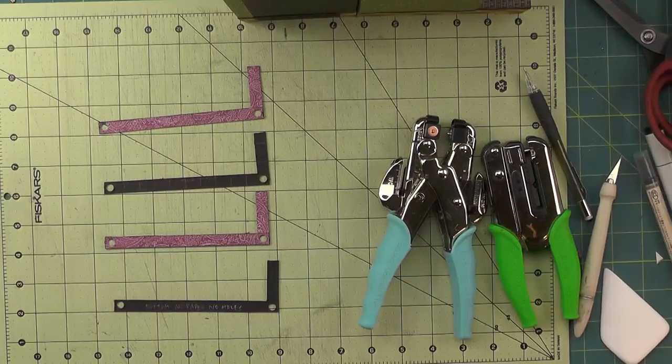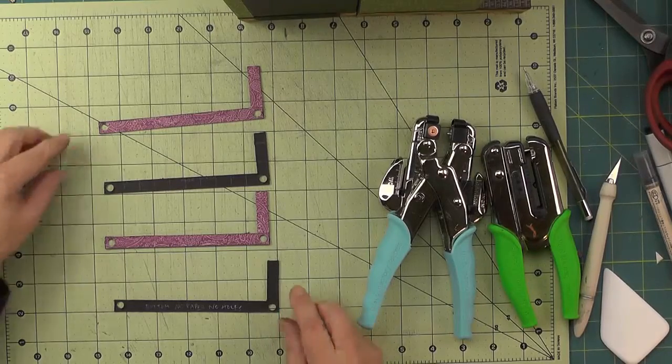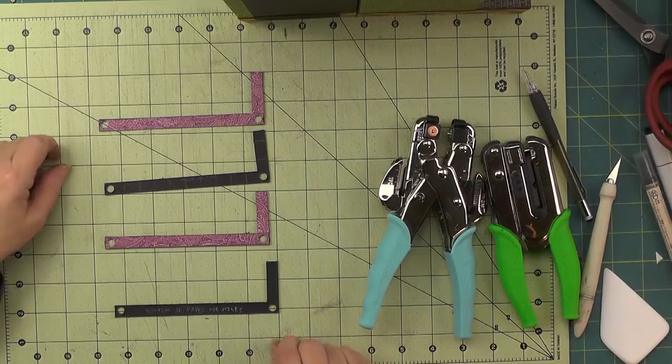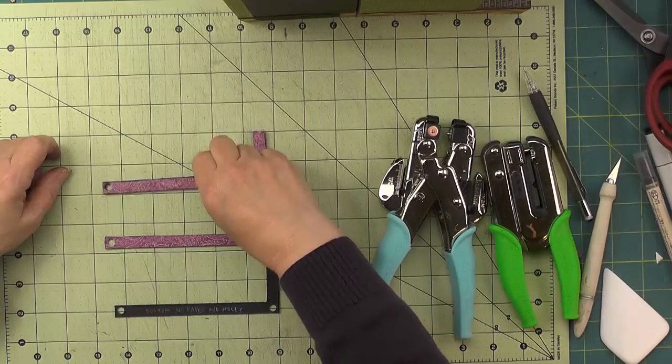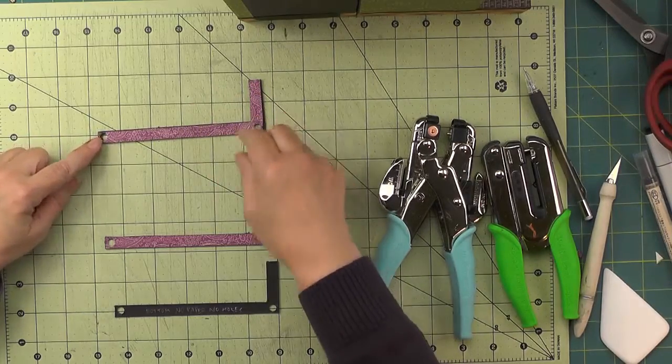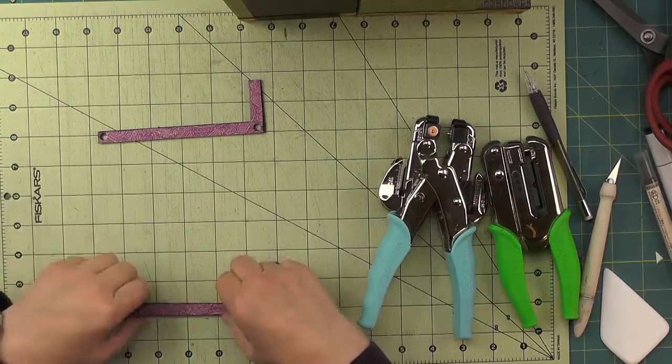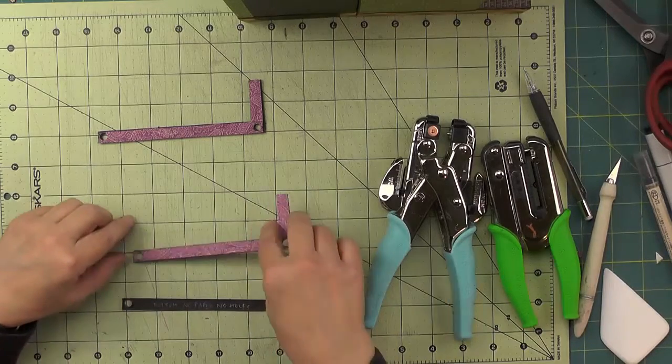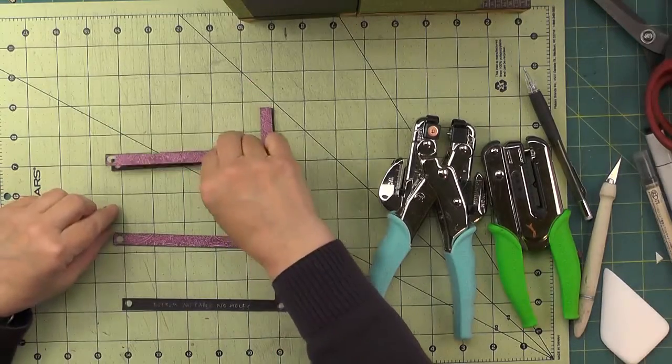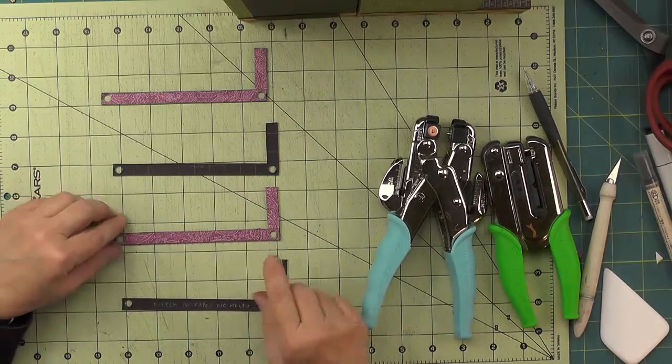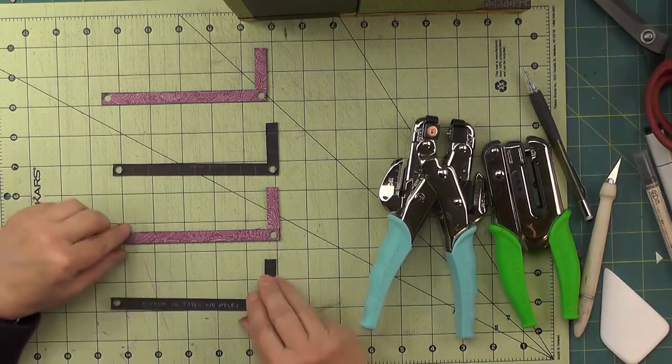Now I have all four of my pieces with the holes punched - two with paper and two without. The way this is going to go together is that the top railing consists of a paper piece and a non-papered piece, as does the bottom railing. But before we put them together, we want to punch some holes for our balusters.